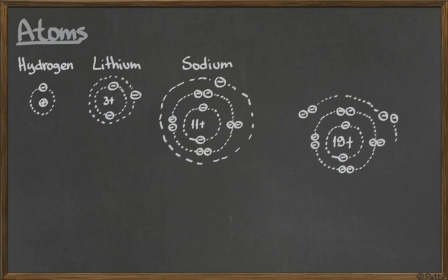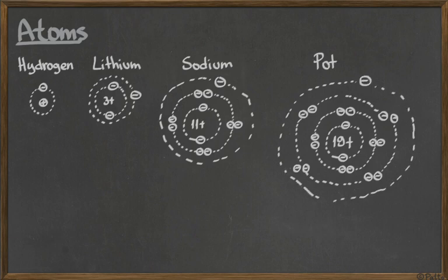Potassium has 19 protons in the nucleus, so it has 19 electrons flying around it. It has two, eight, eight, and in the last shell it contains one electron. If you saw a trend here, all these elements I showed you — hydrogen, lithium, sodium, potassium — they all have one electron in the last shell.